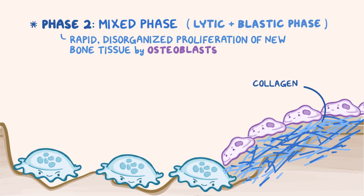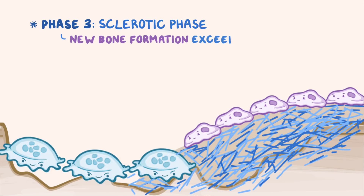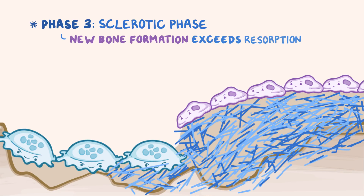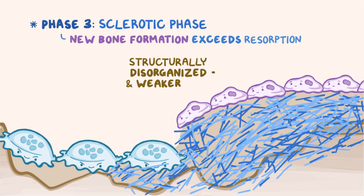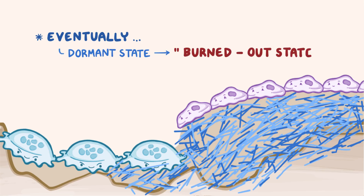The result is that collagen fibers are deposited in a haphazard way. Phase 3 is the sclerotic phase, and that's where new bone formation exceeds bone resorption. The final result is bone that's structurally disorganized and therefore weaker than normal, healthy bone. Eventually, the osteoblastic activity also slows down, and there's a dormant state in the disease, called the burned-out state.